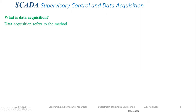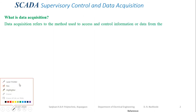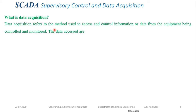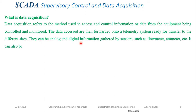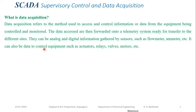Data acquisition refers to the method used to access and control information or data from the equipment being controlled and monitored. The data accessed is then forwarded to the telemetry system, ready for transfer to different sites. It can be analog or digital information gathered by sensors such as flow meters, ammeters, etc. It can also be data used to control equipment such as actuators, relays, valves, and motors.